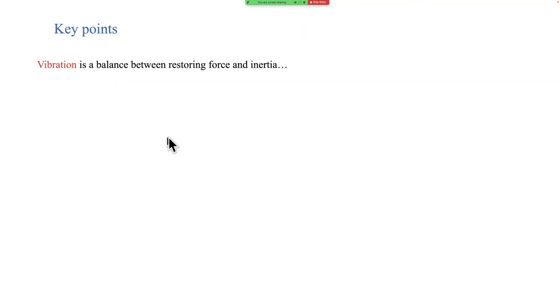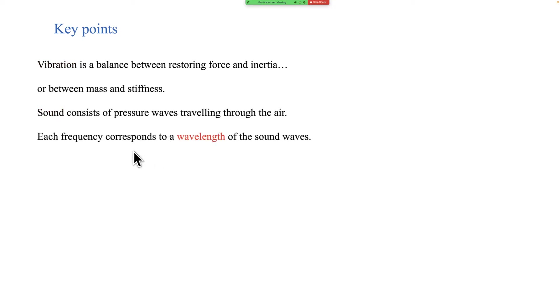So let's have a quick summary of what we've covered in this lecture. We've seen that vibration is a balance between restoring force and inertia, or equivalently, you could describe it as a balance between mass and stiffness. Sound consists of pressure waves travelling through the air at the speed of sound. Each frequency of sound has a particular wavelength of those sound waves. Different sources of sound produce waves which add together to make the total sound field, and they combine into these things called interference patterns because they may add up or they may cancel out, and that can result in complicated sound fields. And again, that is something that will be important to us later on.